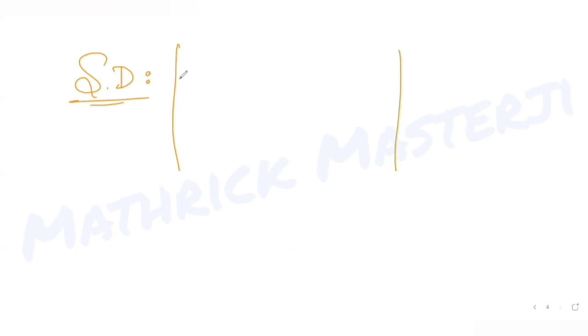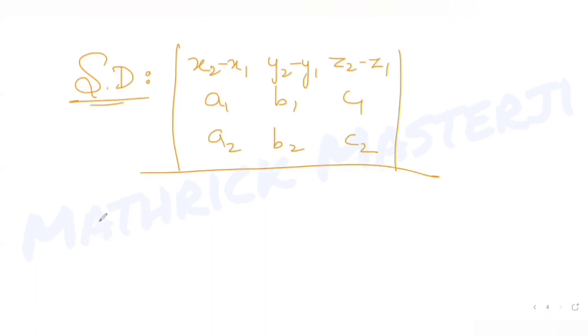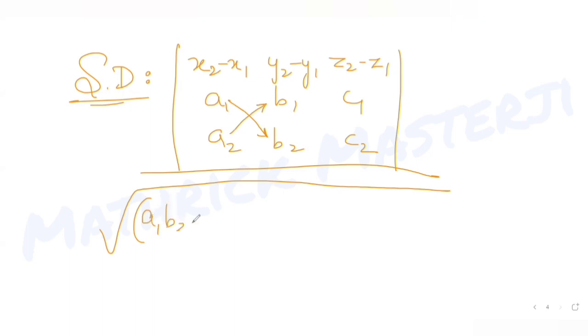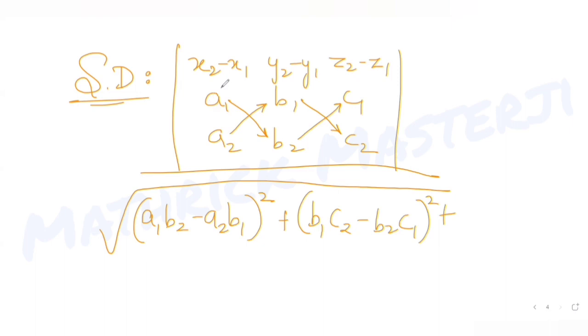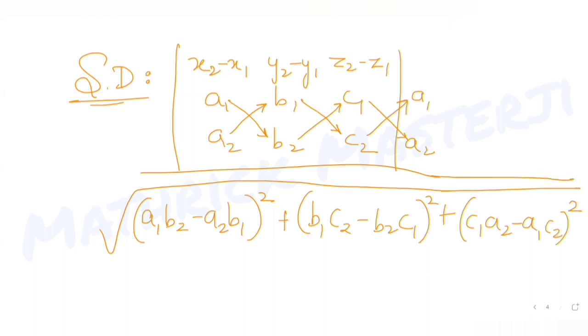Now let's use the shortest distance formula. The shortest distance is given by the determinant of the matrix with rows (x2 - x1, y2 - y1, z2 - z1), (a1, b1, c1), and (a2, b2, c2), divided by the square root of (a1·b2 - a2·b1)² + (b1·c2 - b2·c1)² + (c1·a2 - a1·c2)².